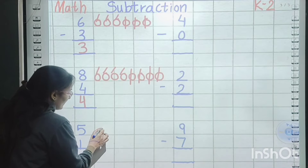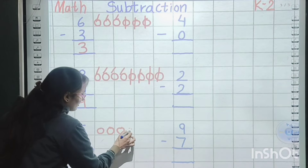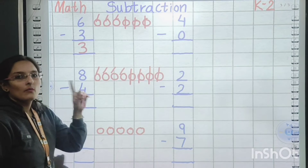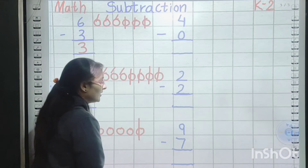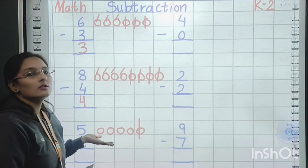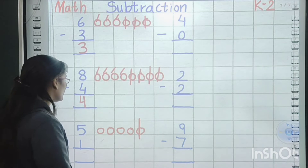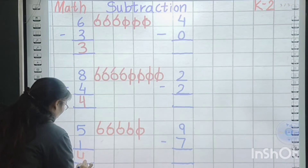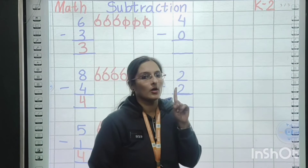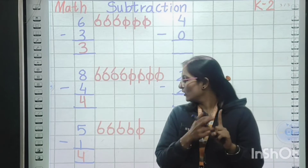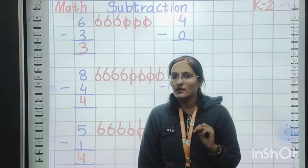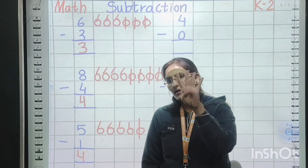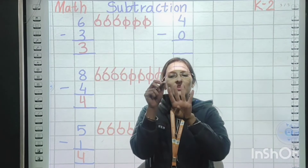Moving to the next sum: five minus one. How many balls do we make? Five: one, two, three, four, five. How many balls do we cut? Just one — from the back. Count the remaining balls: one, two, three, four. The answer is four. Next method — fingers: show five fingers, cut down one finger. How many fingers are remaining? One, two, three, four. Yes, the answer is four.